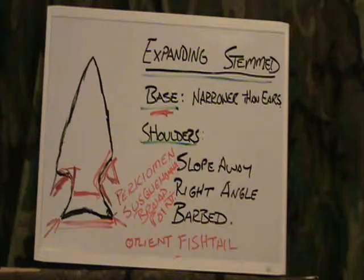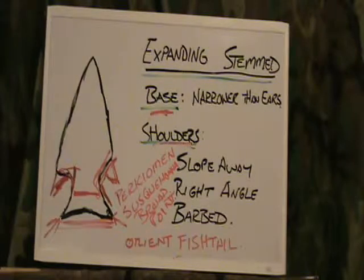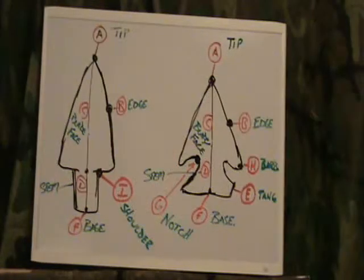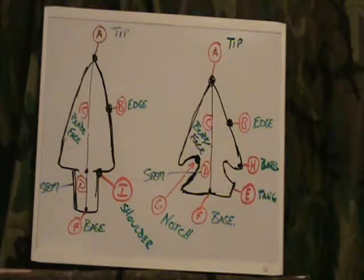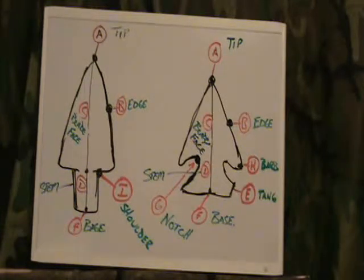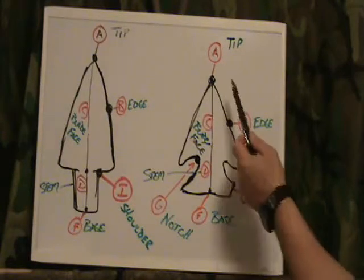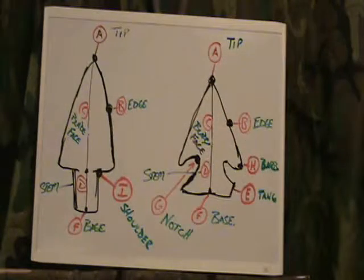I'm going to clean this off and we're going to go into all these different terms that I threw at you. We're going to cover the base, the shoulders, the point, the ears, and the medial ridge — I'll explain all that. The last part of this tonight is going to be the nomenclature of points. I've touched on a little bit of it; now I'm actually going to put it out there for you. We know A is the tip, or the point.